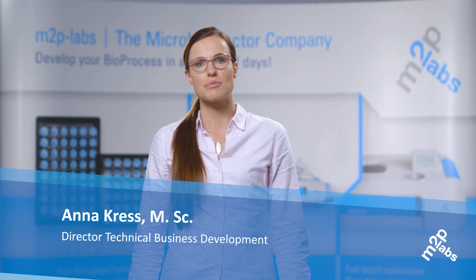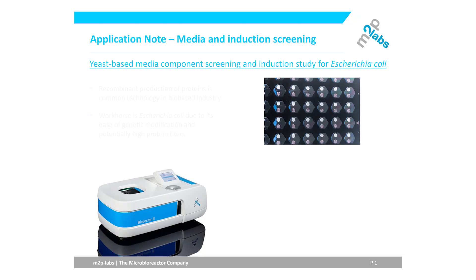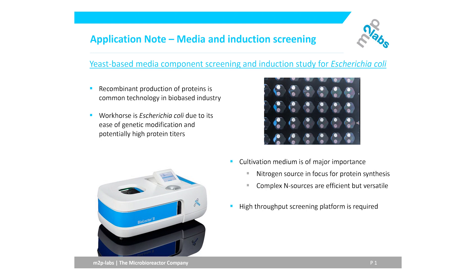Hi, my name is Anna and I'm Director of Technical Business Development here at M2P Labs. Today I want to present to you our new application note about media and induction screening. Recombinant protein production is a common technology in bio-based industries, with its workhorse being E. coli due to its ease of genetic modifications and potentially high protein titers. To achieve high protein titers, the cultivation media is of major importance.